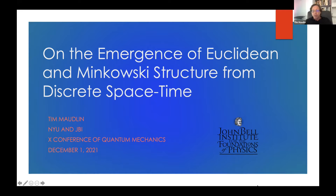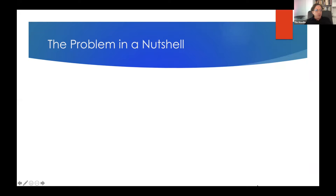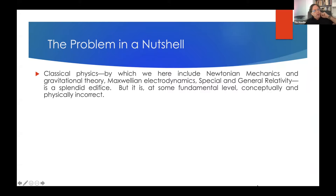For some years I've been trying to think about how to do spacetime geometry with a discrete foundation rather than a continuum. Here are some things to contextualize this. We start with classical physics — Newtonian mechanics — including special and general relativity as the ultimate flourishing of a classical picture. But we know that all of that is wrong at some level.